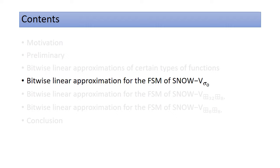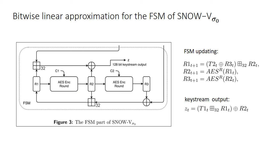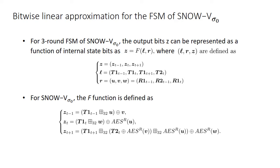After introducing the five types of nonlinear functions, we present the applications of these computation algorithms to some variants of SNOWV. The first is SNOWV-Sigma0. The figure shows the FSM part of SNOWV-Sigma0. In this variant, the permutation Sigma used in the FSM updating is assumed to be identity, i.e., there is no bytewise permutation. We first study the bitwise linear approximations for the FSM. For a three-round FSM, the output bits can be represented as a function of internal state bits, with the variables and the F function described above.